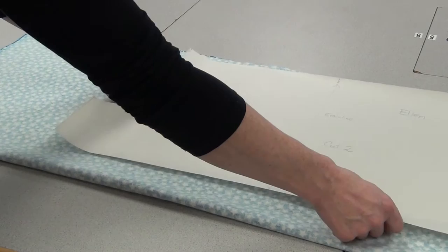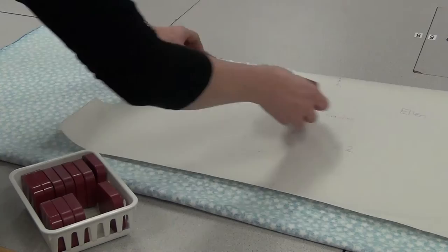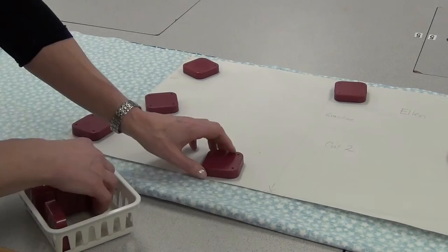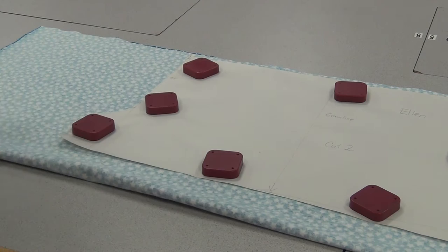Then take your pattern and put it close to the top. Using weights, put them in the corners and the middles just so that you can hold this down securely so you can draw around it. Use as many as you need but make sure you share with your classmates. So once that's down, you're ready to draw.